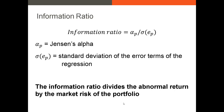Finally, we have the information ratio. The information ratio divides the alpha of the portfolio by the non-systematic risk, or firm-specific risk. This firm-specific or non-systematic risk is the risk associated with the individual firm rather than the firm's exposure to the market. This risk, which we refer to using sigma-E-sub-p, is the residual from our CAPM regression. Some argue it measures the amount of risk the manager takes relative to the benchmark.